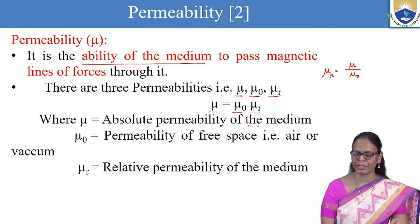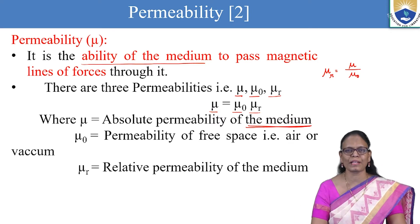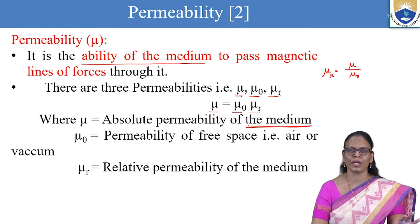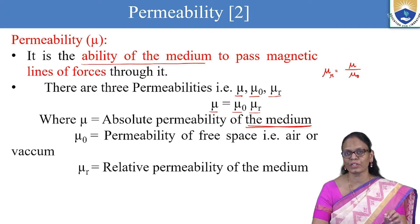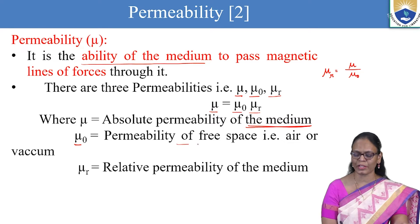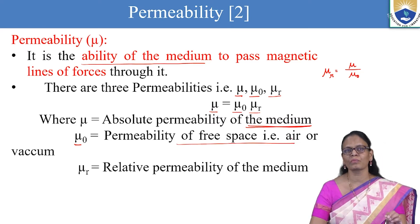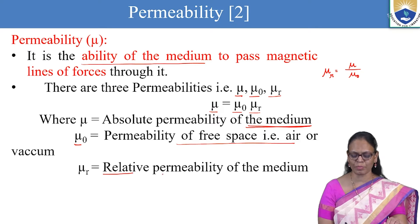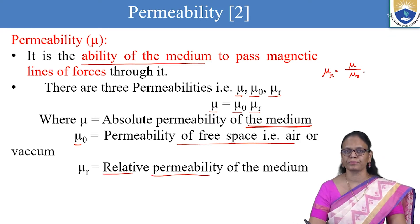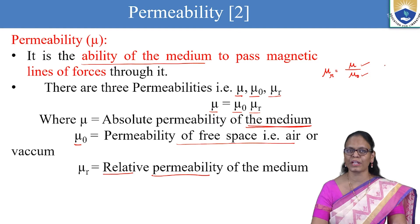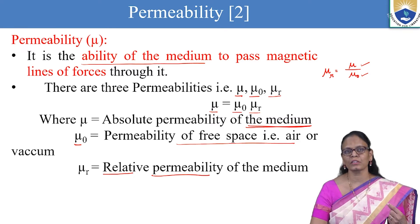Mu is the absolute permeability of the medium — the permeability of whatever medium we place the substance in. Mu naught represents the permeability of free space, that is air or vacuum. Mu r is the relative permeability: mu r equals mu upon mu naught, meaning it is the permeability of the medium with respect to free space.